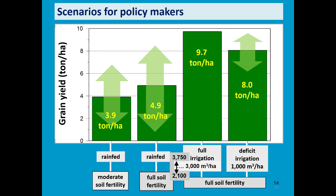Making this type of graphs is helpful for policymakers. On the basis of these results, which are checked with field data, they can decide to give incentives to farmers to apply more fertilizers — for example, by subsidizing fertilizers. Or they can invest in irrigation so that more grain yield can be produced in the country. And if water is a constraint, they can see that in irrigation schemes high yields can still be produced with only one-third of the amount of water applied.